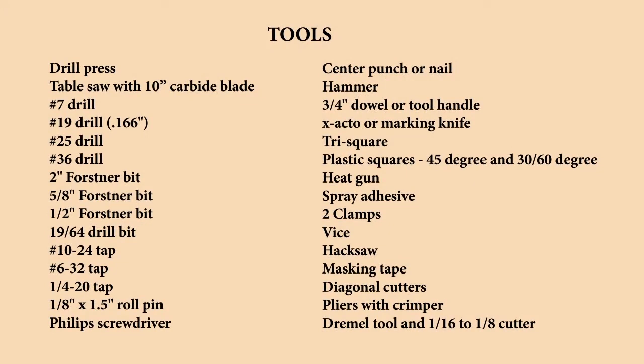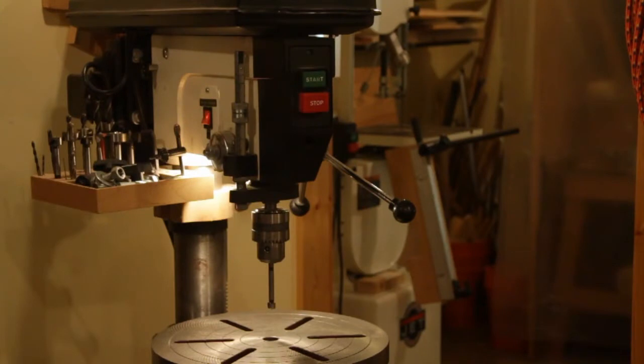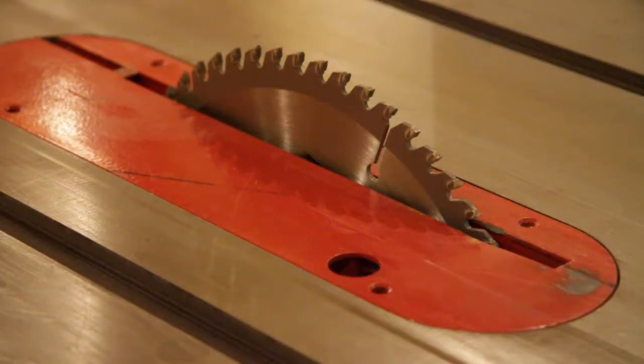Let's take a look at the tools we're going to need. First, you're going to need a drill press. A benchtop model will be just fine. Then a table saw that will take a 10-inch carbide tip blade, preferably a 60 to 80-tooth blade.